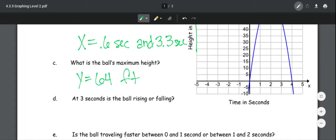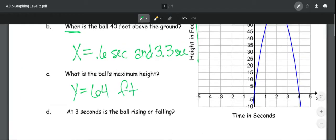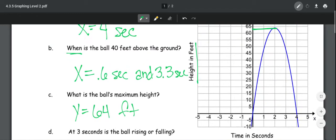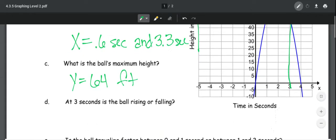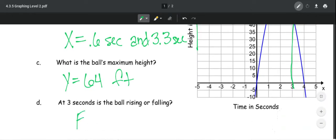At three seconds, is the ball rising or falling? So three seconds, let's get rid of that. So at three seconds, it's right here. So if you see the ball, is it getting higher or lower? It is getting lower. So this is falling.